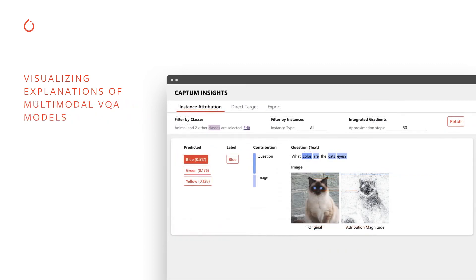We can also extend the list of renderers and define new ones for any specific feature type. Most importantly, we can visualize attributions of multimodal models — in this case, visual question answering. This is especially interesting because we can see which modality the important signal is coming from, and the tool can help us dig deeper into a specific modality to see where the important signal originates.